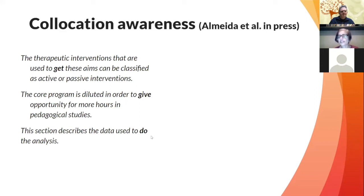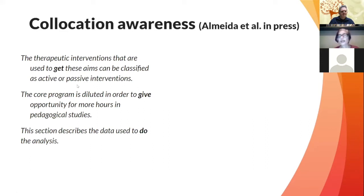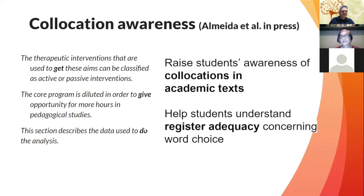Even when writing in an academic register, students would use these very common verbs — like 'get aims' or 'give opportunity' — rather than more appropriate academic collocations. So we created activities to raise students' awareness of collocations in academic texts and to help students understand register adequacy concerning word choice. The title of our paper is 'Is There Another Choice?' — because sometimes what students write is not really wrong, but it doesn't sound appropriate for that register. The activities were used with higher-intermediate students in our college.